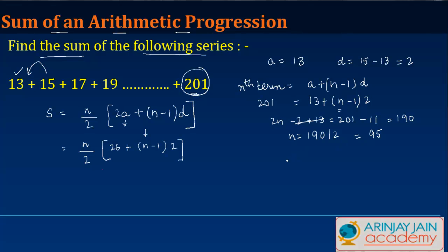So the value of this equation now stands at 95 by 2, times 26 plus 95 minus 1, which gives you 94. 94 into 2 gives you 188. 188 plus 26 gives you 214. 214 divided by 2 gives you 107. So the sum is 95 into 107, which is 10,165.